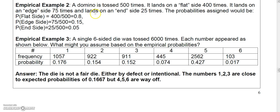Let's do some more probability. This is another empirical example. A domino is tossed 500 times. Let's say it lands on its flat side 400 times, it lands on an edge side 75 times, and lands on an end side 25 times. Then we could assign the empirical probabilities as this.